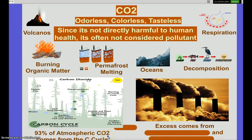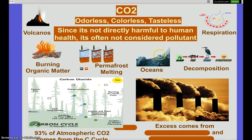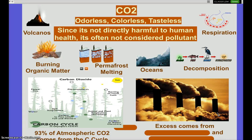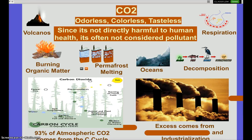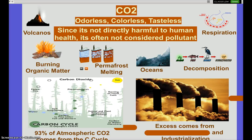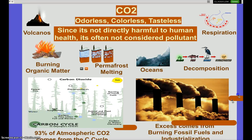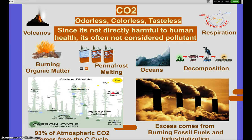Carbon dioxide enters our atmosphere through the carbon cycle: burning organic matter, volcanoes, permafrost melting, oceans, decomposition, and respiration all produce CO2. The oceans both dissolve and release CO2. The reason CO2 is a concern is that industry — especially the burning of fossil fuels — has put it in excess. Transportation and electricity production both involve burning fossil fuels, which has led to excess CO2 in our atmosphere.